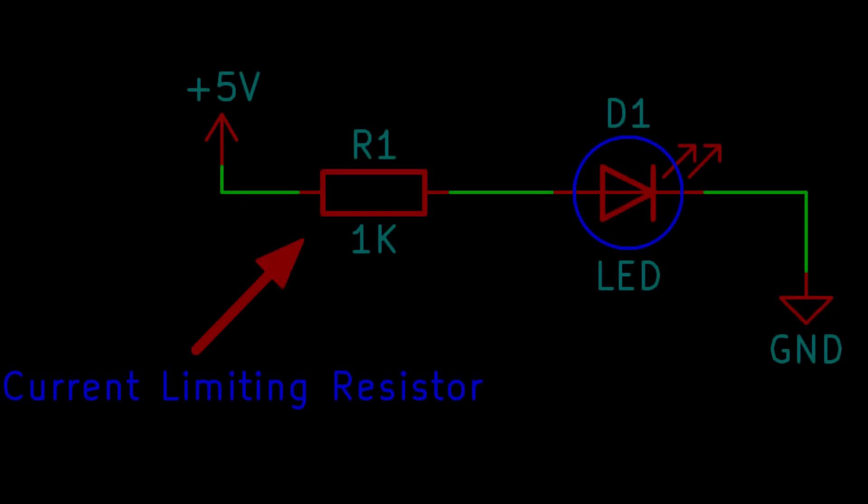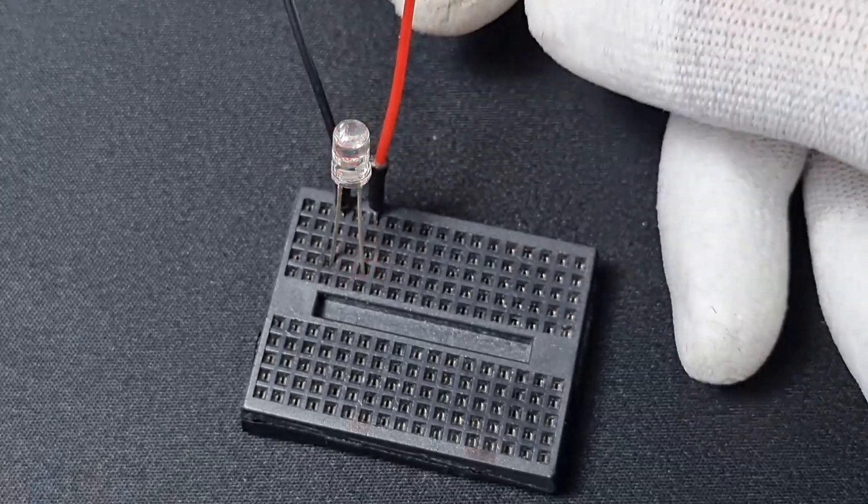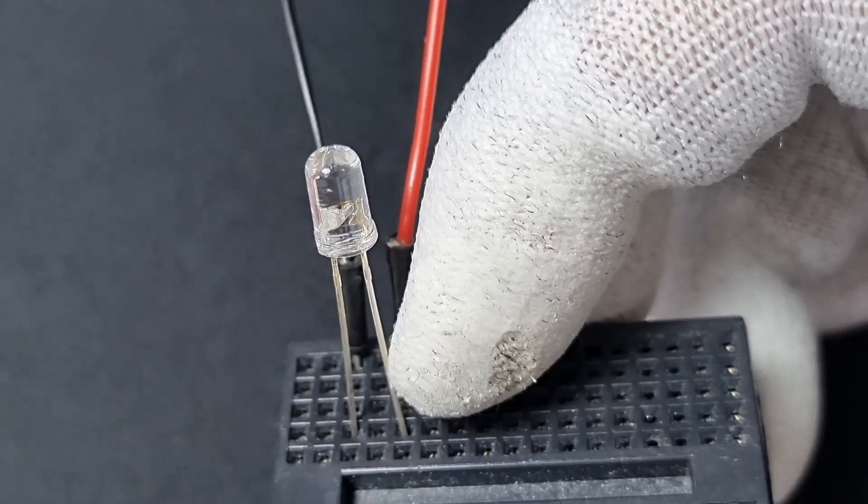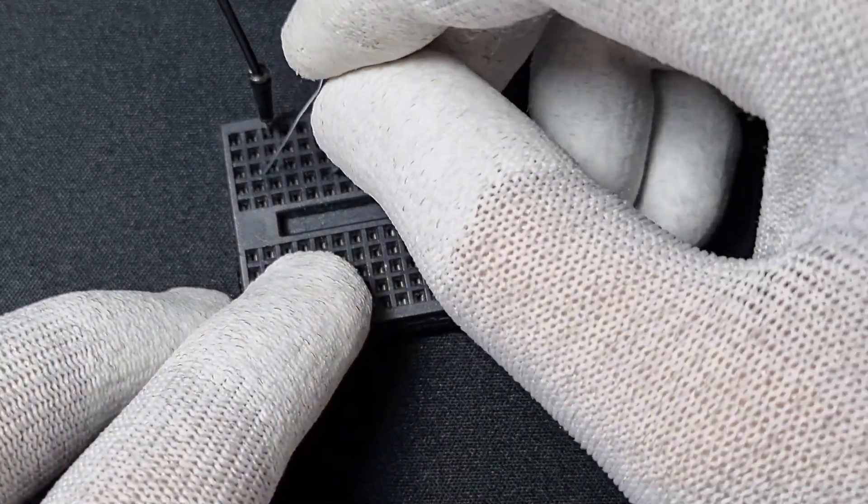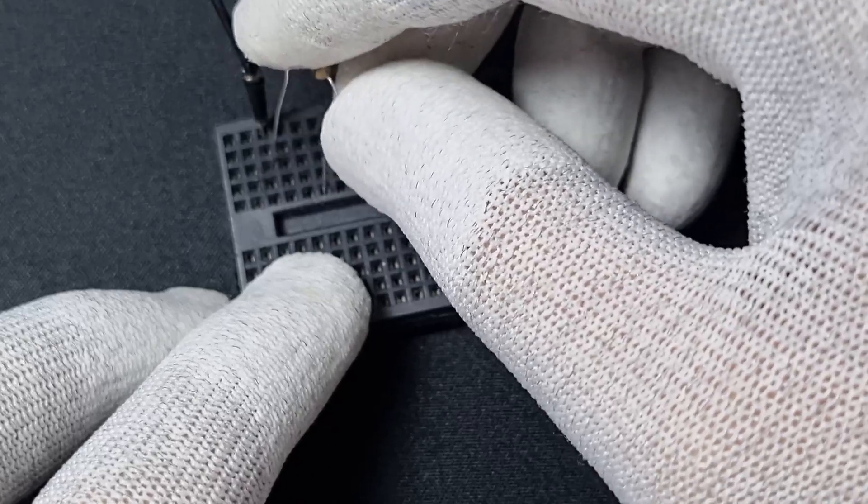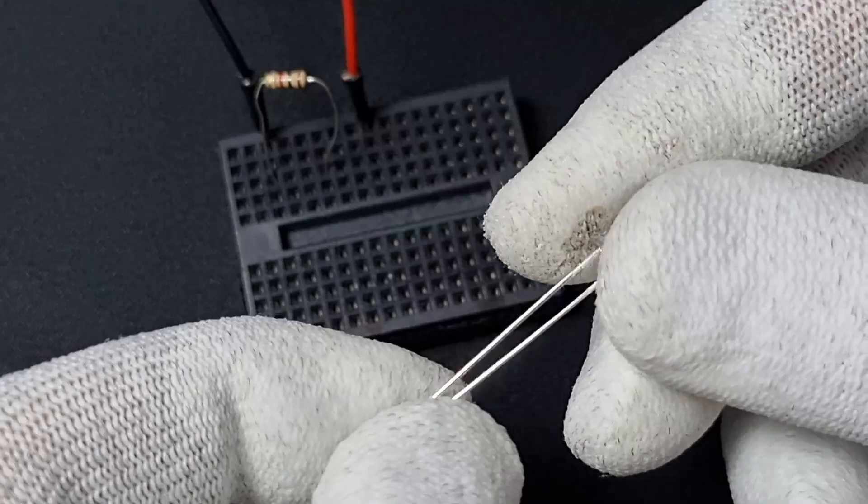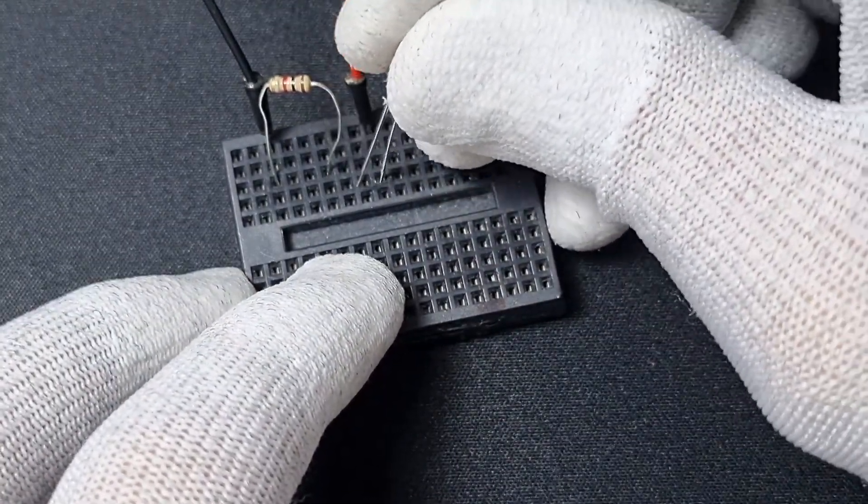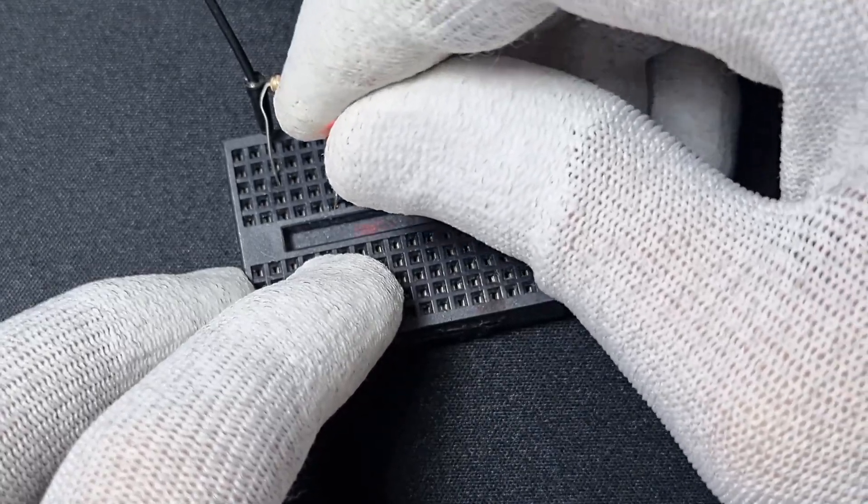Probably the most common use case for a resistor is to limit the current flowing through a circuit. For example, if we directly connect an LED to a 5 volt source, the LED will likely burn out. To prevent this, we place a resistor in series with the LED. What happens is that we have 5 volts and we want the LED to operate at a lower voltage, so we dissipate some of the energy across the resistor, allowing the LED to work safely.